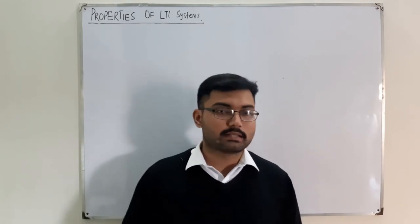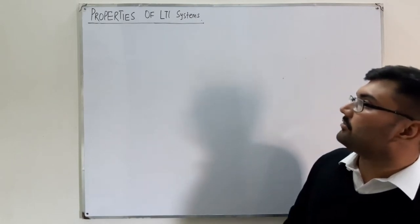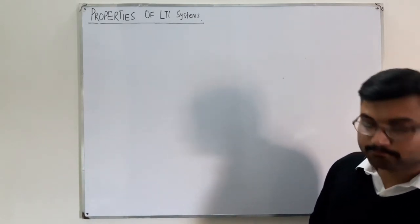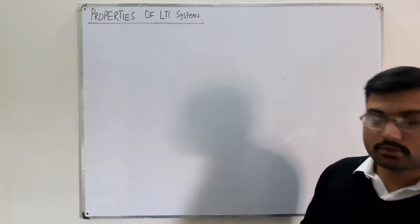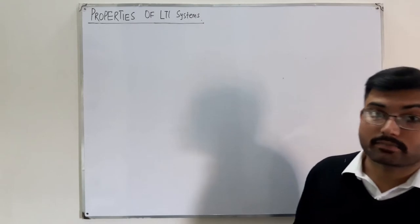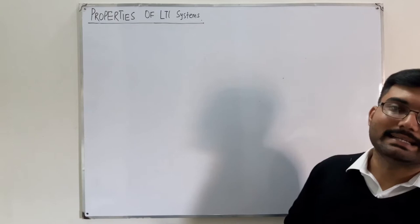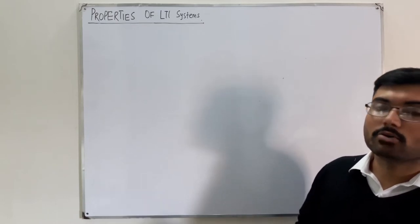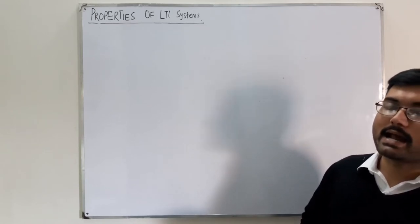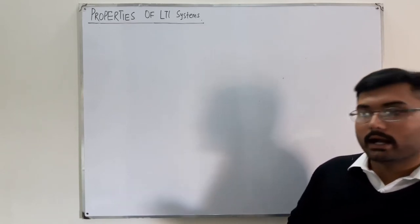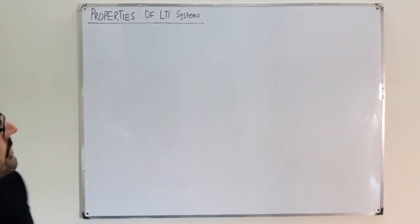Bismillahirrahmanirrahim. Assalamu alaikum. Salah Al-Khan here, and today we start the new topic: the properties of LTI systems. We have seen the properties of the convolution operator; now we look at LTI systems. These are the same basic properties from chapter one: memory, invertibility, causality, stability, linearity, and time invariance. Since LTI systems already have linearity and time invariance, those two are done, so we only have to check four more properties.